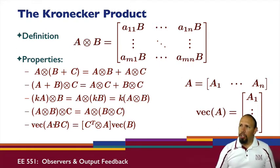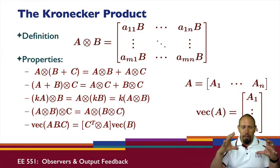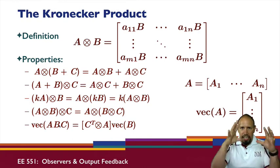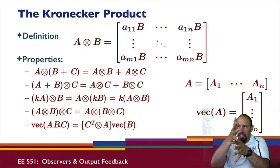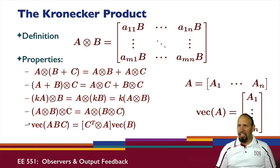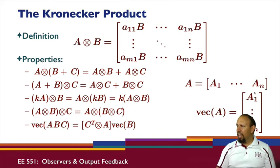We have these various properties for the Kronecker product. The one I want to look at especially is this one: the VEC of the product ABC. By VEC I mean you have a matrix, and VEC is taking this matrix, taking the columns and stacking the columns into a single vector. You can show that the VEC of the product ABC is equal to this Kronecker product times the VEC of the thing in the middle. If A is a matrix with columns A1 through AN, then VEC of A is just stacking those columns this way.